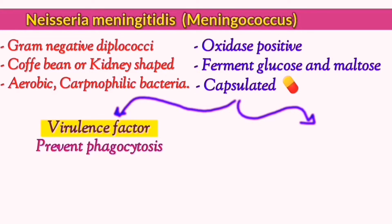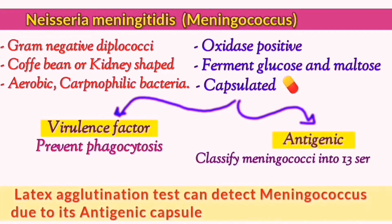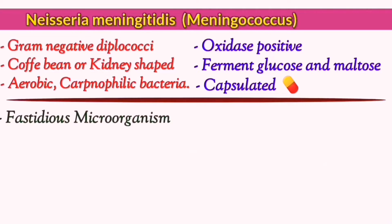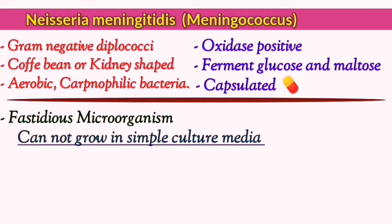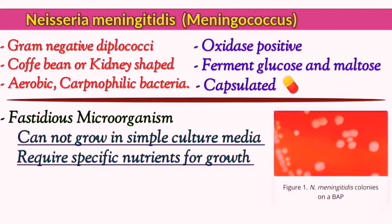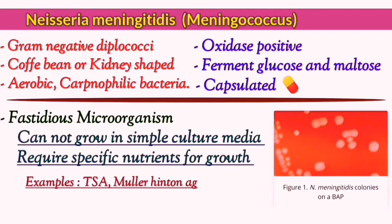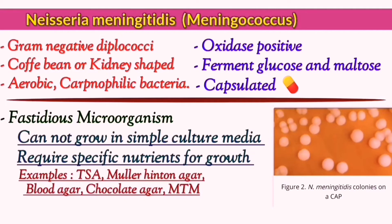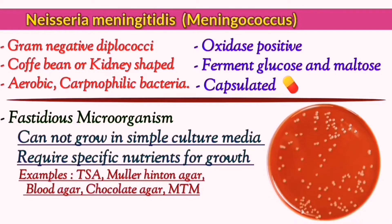The capsule is also antigenic and can be used to separate meningococci into 13 distinct serogroups. Meningococci is considered a fastidious microorganism which cannot grow on simple media and requires specific nutrients found in enriched media to grow. Tryptone soya agar, Muller-Hinton agar, blood or chocolate agars are all suitable media, but the best is modified Thayer-Martin agar.